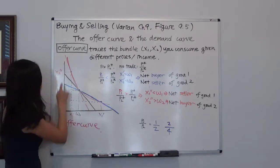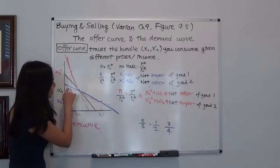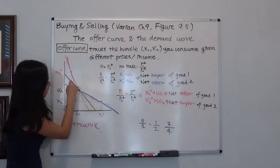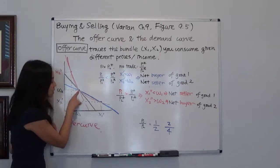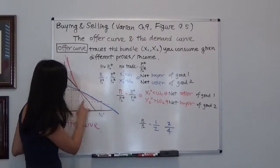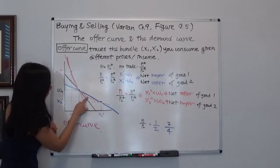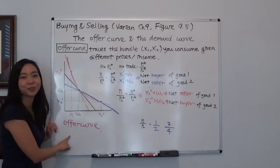You have less good 1 and more good 2. So eventually, given different prices that go through this endowment, you are going to have different consumption bundles. If you trace all the consumption bundles, you're going to get this pink line, and that is our offer curve.